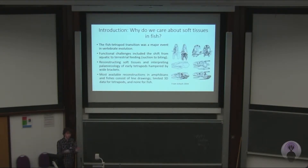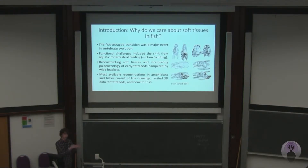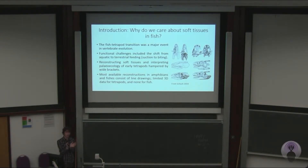Why do we care about soft tissues in fish specifically? The fish-tetrapod transition was a major event in the evolution of vertebrates. One of the main things that happened at this transition was a shift from suction feeding in the aquatic environment to biting and jaw prevention in a terrestrial environment. But one of the problems with trying to reconstruct paleoecology in transitional forms across the fish-tetrapod transition is this issue of wide brackets — there aren't many closely related living taxa that neatly bracket early tetrapods. What we do have, like lungfish, are very highly derived, very specialised, and not very representative of the ancestral forms.